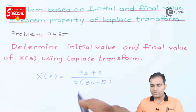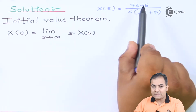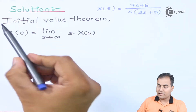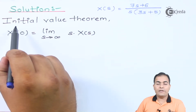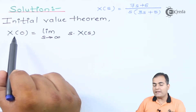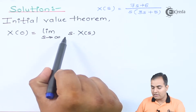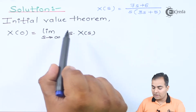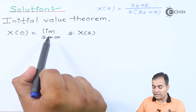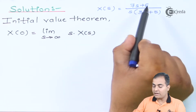We'll find the initial value first. My X(s) is (7s + 6) divided by s times (3s + 5). According to the initial value theorem of Laplace transform, the formula is: x(0) equals the limit as s tends to infinity of s times X(s).